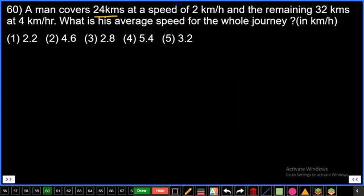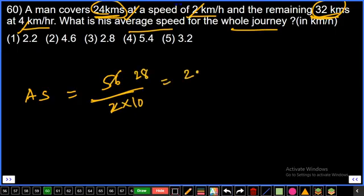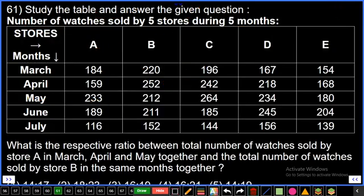Question number 60: A man covers 24 kilometers at a speed of 2 kilometer per hour and the remaining 32 kilometers at 4 kilometer per hour. What is his average speed for the whole journey? Average speed equals total distance by total time. Total distance is 24 plus 32, that's 56. For time: 24 by 2 is 12 hours, and 32 by 4 is 8 hours. Total time is 20 hours. So 56 by 20 equals 2.8. Average speed is 2.8 kilometer per hour. Third option.